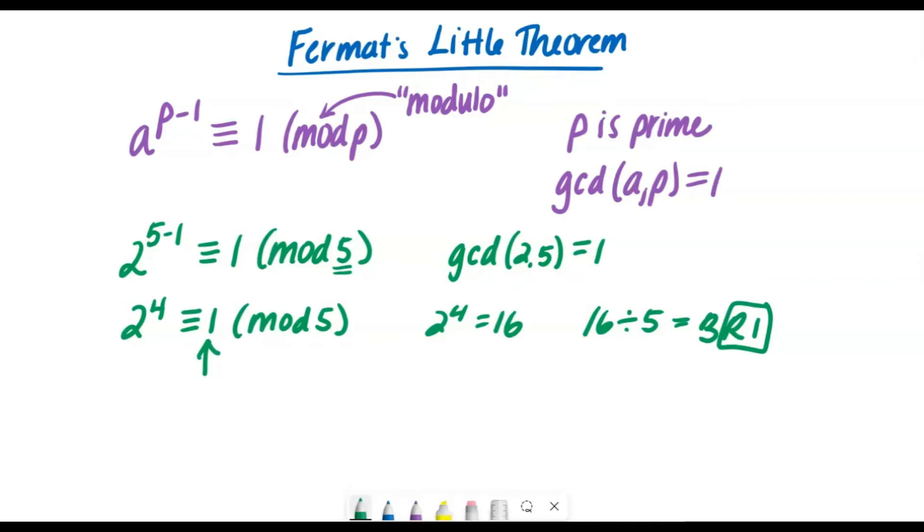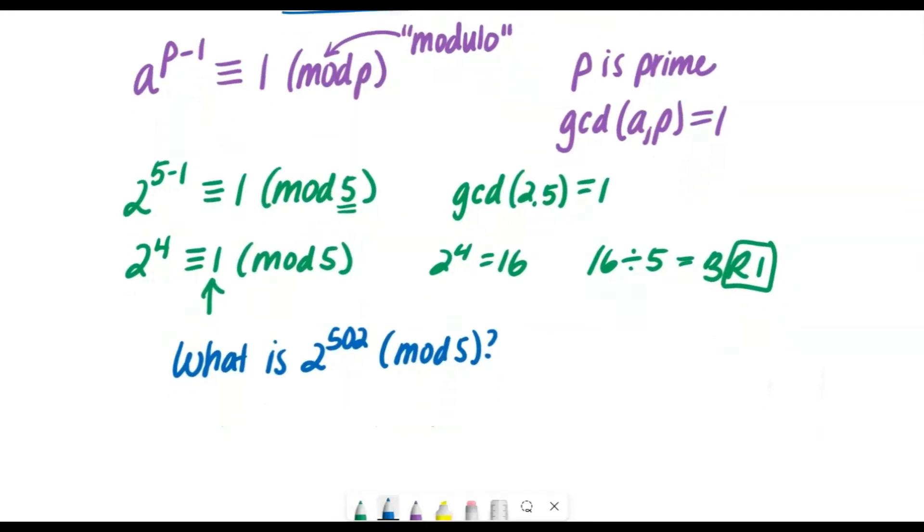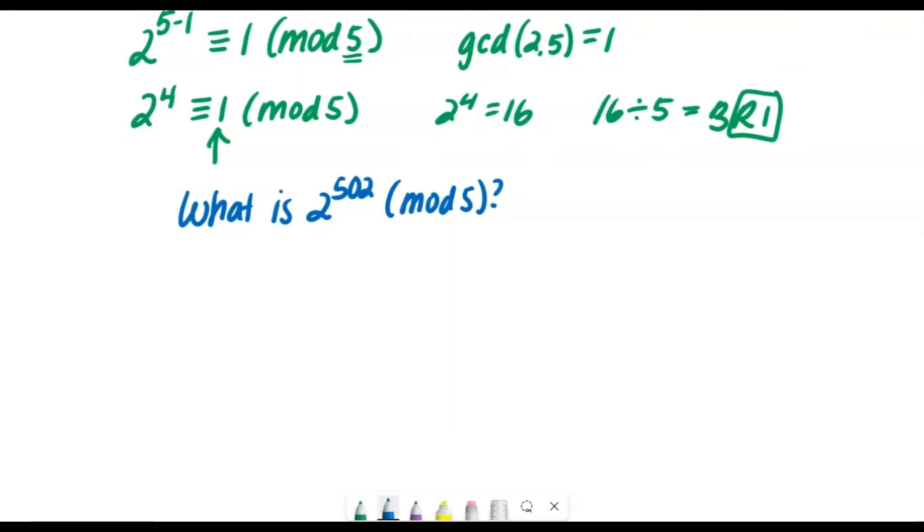So now let's use a huge number, so big that even our calculator couldn't even compute it. How about what is two to the power of 502 in mod five? And go ahead and try it. Even try to type that in the graphing calculator, two to the power of 502. And the calculator can't even compute it because once again, that number is so large. So what could we do here?